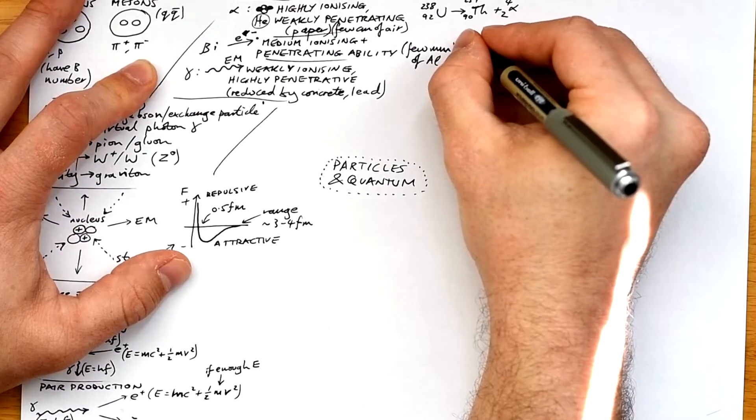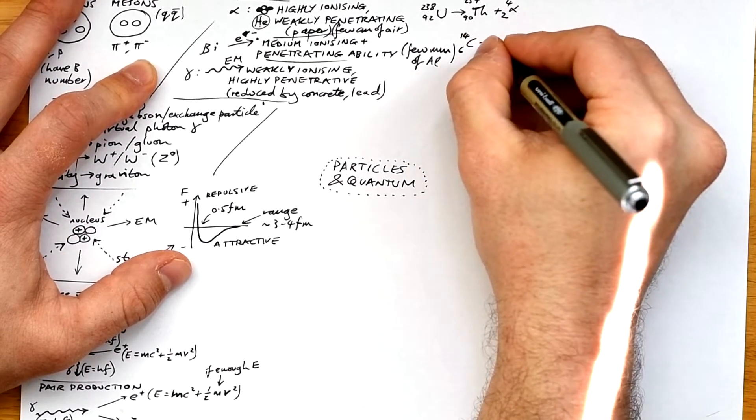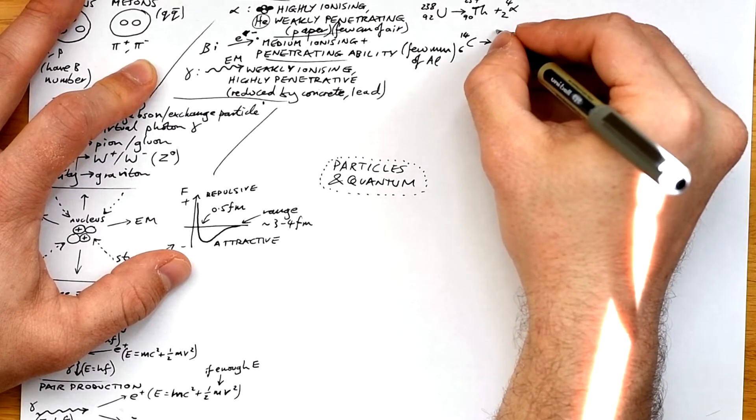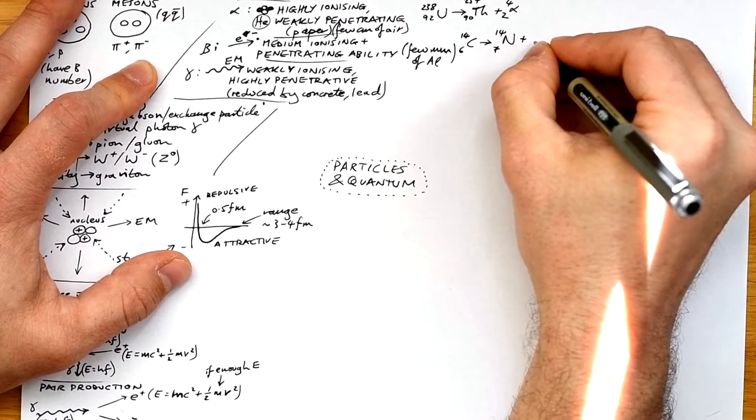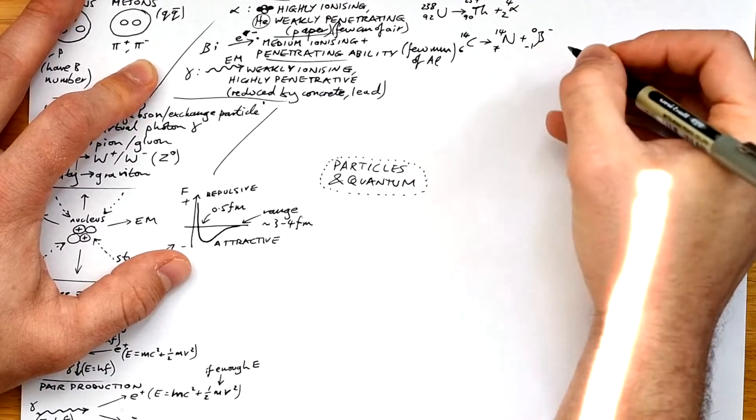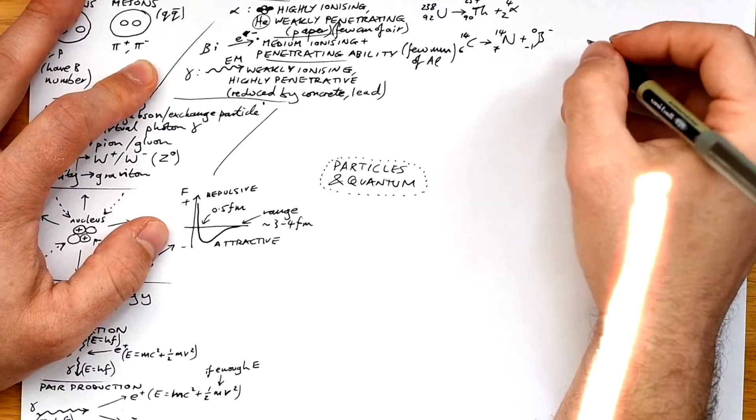Okay, here are the decay equations for alpha and beta. We know that alpha is four and two, beta is zero and minus one, because it's got the opposite charge to a proton, and so therefore it's just mass then, isn't it? Don't forget that for beta decay, we must have an anti-electron neutrino produced as well to make sure that lepton number is conserved.